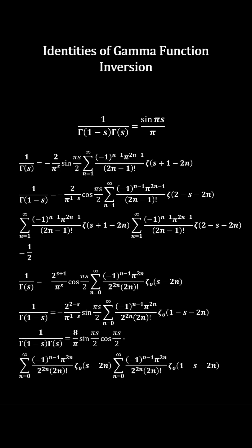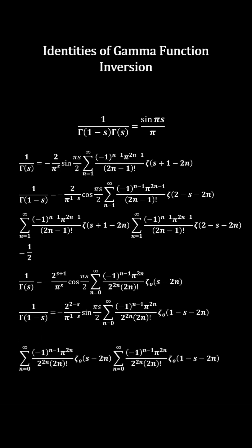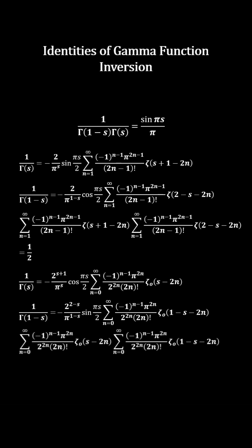This holds true for all regions of s, and even if the sum of zeta functions or the sum of odd zeta functions is 0 due to the trivial zeros, the other sum of zeta functions or the sum of odd zeta functions contains the pole of zeta(1) or the odd zeta(1).